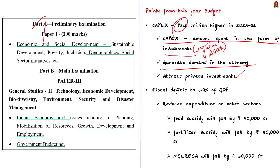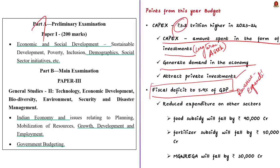Another important aspect of the budget is the fiscal deficit target. The government is committed to reducing the fiscal deficit to 5.9% of GDP. The fiscal deficit is the shortfall in government receipts relative to its expenditures. While the government wants more capital expenditure, it also needs to bring down the fiscal target, so it has tried to reduce expenditure on other sectors to compensate for the increased capital spending.